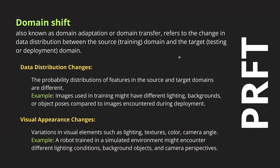So what is the definition of domain shift or distribution shift? Domain adaptation or domain transfer all refer to a change in the data distribution between the source — the training domain — and the target, the testing or deployment domain. You have data distribution changes, visual appearance changes: different lighting, different textures, different colors, different camera angles, different background objects. If the Mars rover can't do its job because lighting changes, or an AI machine in the next room has different colors or background objects, our AI system will fail.